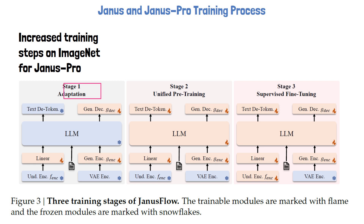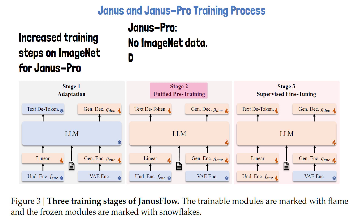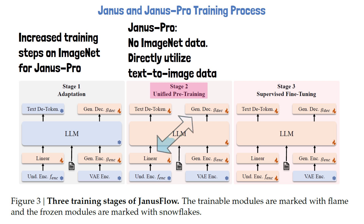In the second stage, called Unified Pre-Training, we continue to train the new modules, but now we also train the large language model and its built-in text prediction head so it can better handle multimodal embedding sequences. The sample types included in this stage are multimodal understanding, image generation, and text-only data. The difference in Janus Pro compared to Janus is the removal of ImageNet from this phase, directly utilizing text-to-image data, while in the original Janus model this stage started with ImageNet data and gradually increased the ratio of text-to-image data. It is worth mentioning that the image encoder representations are aligned in training with the image generation latent output to strengthen semantic coherence in the generation process.